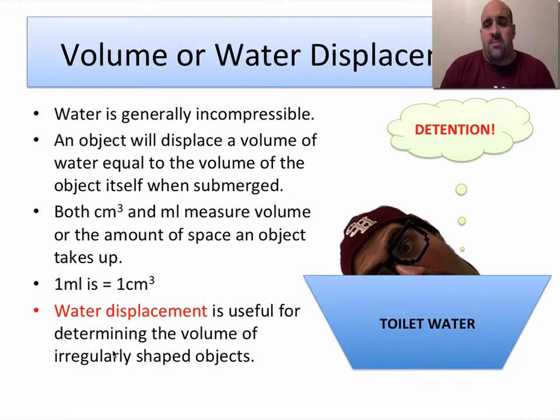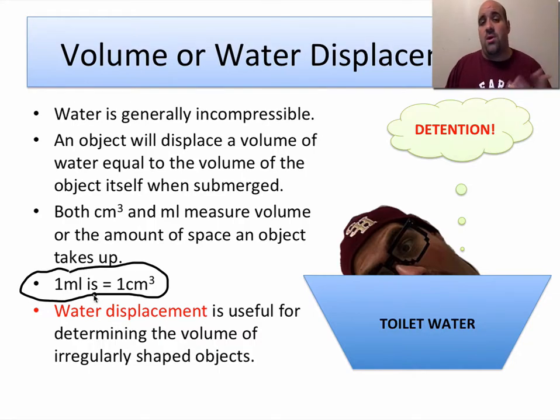So we can use volume or water displacement to measure the volume of irregular objects. And there's some simple facts here. Water is generally incompressible. If you shove your fist into a bucket of water, the water molecules do not compress together, they generally rise up around your arm, and so that actually allows us to use water displacement to measure volume. The important key here is that one milliliter equals one centimeter cubed. Hopefully we know that a centimeter cubed is a measure of volume. When we're measuring things with a graduated cylinder, that long thin column with all the markings on it, those are milliliters, and every milliliter is equal to a centimeter cubed. So if you had 27 milliliters of water, that's the same thing as saying you have 27 centimeters cubed of water.